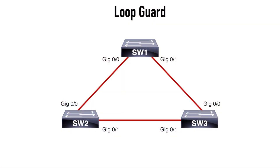Spanning Tree is pretty good at creating a loop-free topology, but sometimes it does need some help. Sometimes we have strange topologies, or maybe we've merged a couple of networks together and created an unusual situation, or maybe we just have a malfunctioning device. Whatever the case may be, it is still possible to have unexpected loops with Spanning Tree, which is why we have the extra protection offered by Loop Guard.